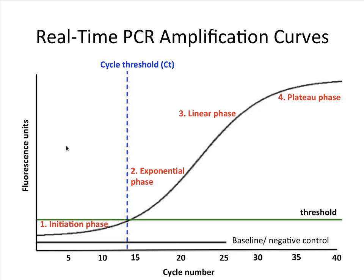Then we hit the linear phase, where some of the components within the PCR reaction may start to become depleted, and this will happen differentially in different samples depending on factors such as how much template was available for amplification. In the linear phase, PCR reactions are not necessarily carried out at the same rate. This is even more pronounced in the plateau phase, when many PCR components become depleted and eventually the reaction stops. It is for this reason that the exponential phase is the most crucial phase in a real-time PCR experiment.